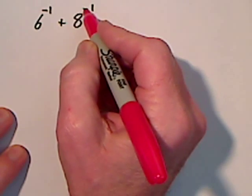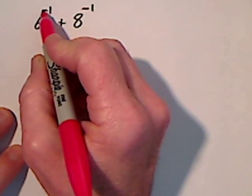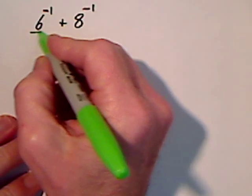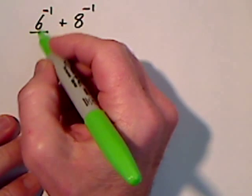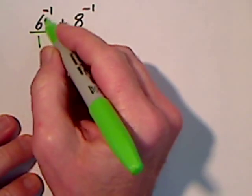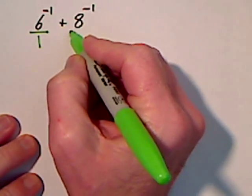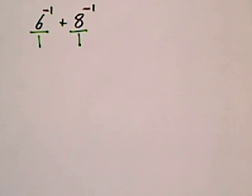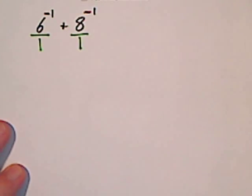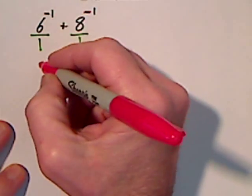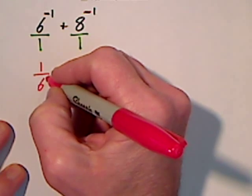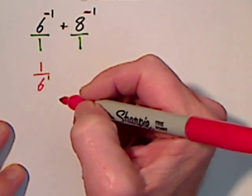This negative exponent means take the reciprocal of whatever it's attached to. One way to show this: take 6 and put it over 1, and this 8 put it over 1, without changing the value. Then by taking the reciprocal, you flip it, so we get 1 over 6. Now this 6, instead of being to the negative 1, it's to the positive 1.